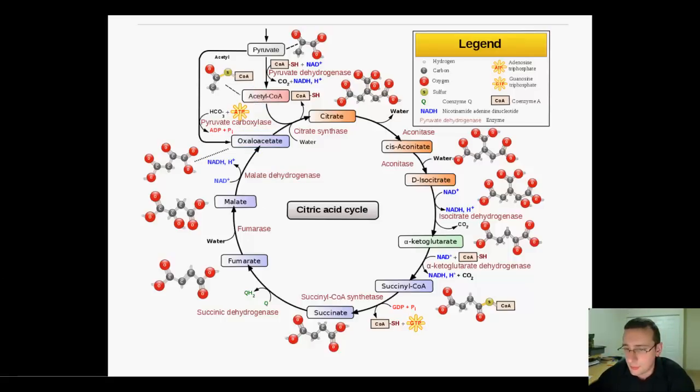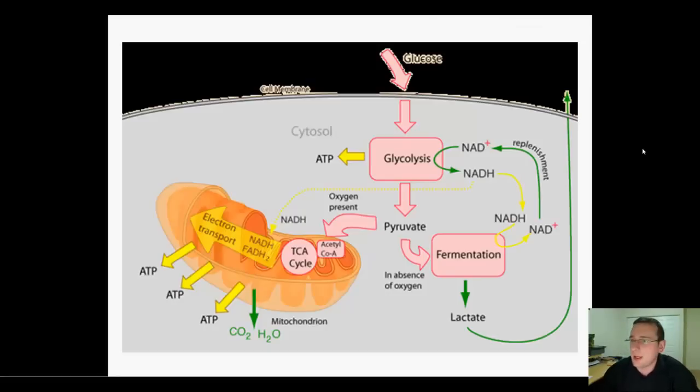Back to this graph that shows the overall view of the process. Understand the difference between aerobic and anaerobic. Everything that happens in the mitochondria is considered aerobic, although only the ETC itself actually consumes oxygen.